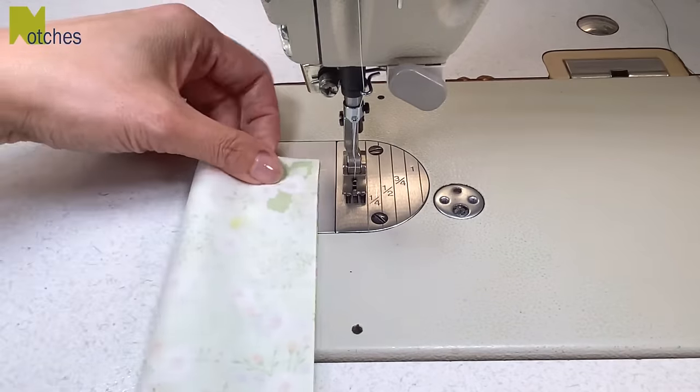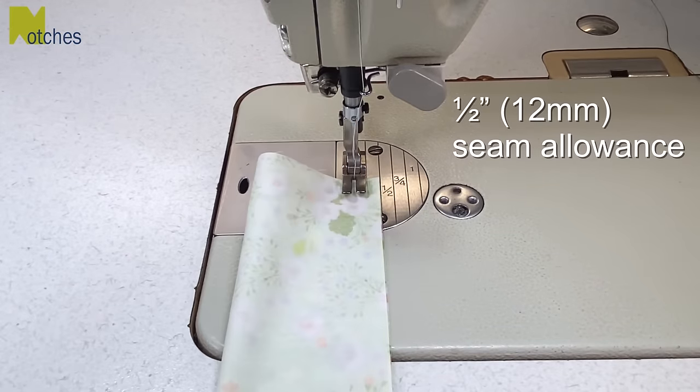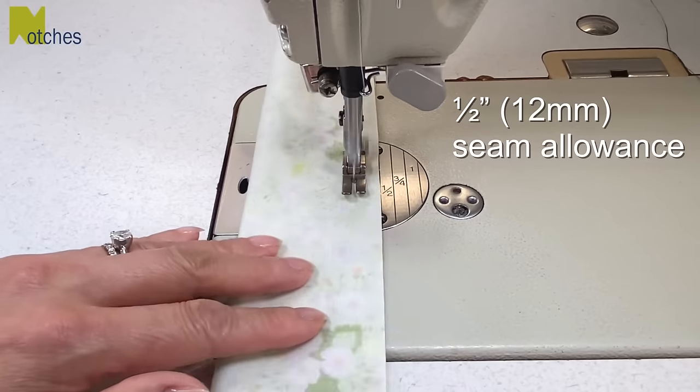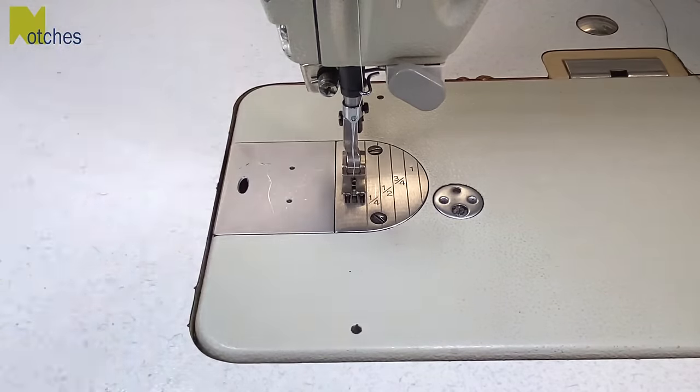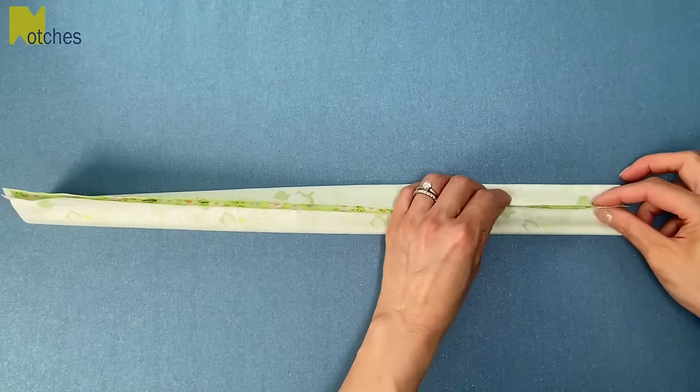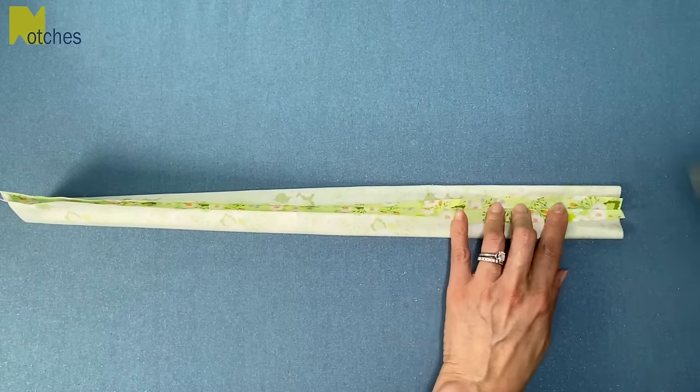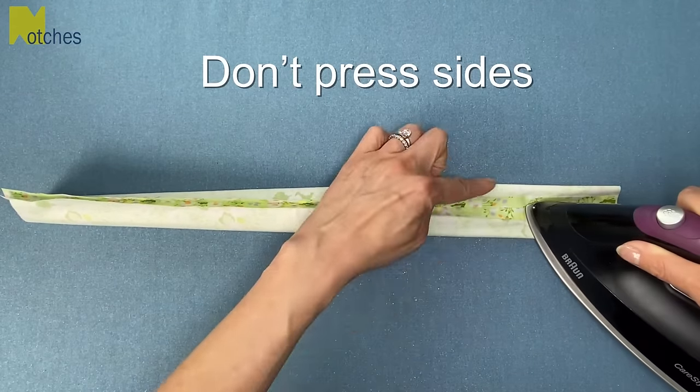Fold your fabric in half, matching the long edges with right sides together, then use a half inch seam allowance to stitch back tacking at the start and finish. Position the fabric so the seam is in the middle, then press open with your iron without pressing the sides.